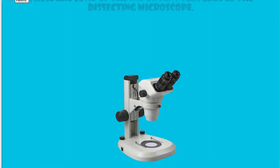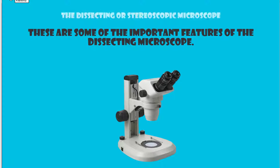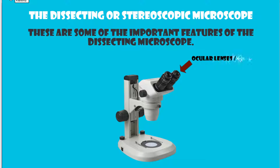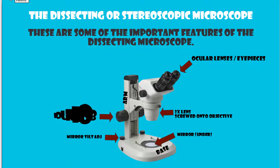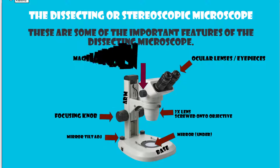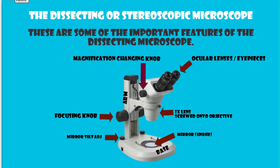These are some of the important features of the dissecting microscope: the ocular lenses or eyepieces, the 2x lens screwed onto the objective, the mirror, the base, the arm, the mirror tilt adjustment knob, the focusing knob, and the magnification changing knob.